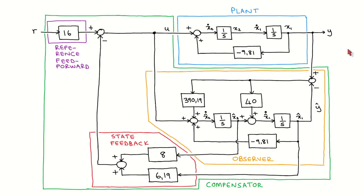We now look at the block diagram of the plant and full compensator for our example. The plant is drawn from the state variable equations. The observer is drawn from the observer equations, where one part simulates the response to the plant input — clearly similar to the plant model — and another part corrects the state estimates by feeding the difference between the measured and predicted outputs back through the observer gain. The estimated states are fed back through the state feedback gain vector, and the result is subtracted from the reference that is fed through the reference feed forward gain to form the plant input.